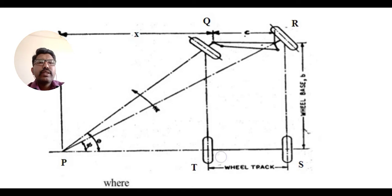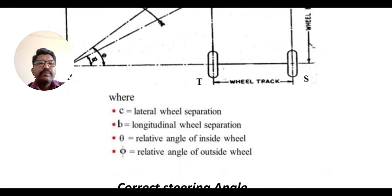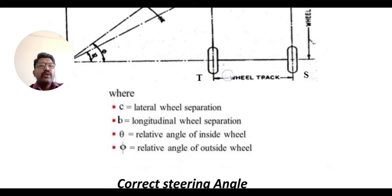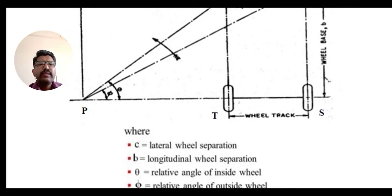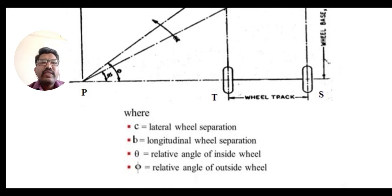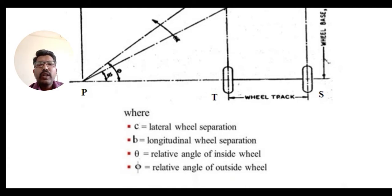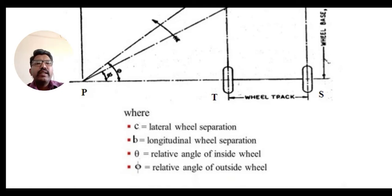When a vehicle is turning, there will be two different angles. Here we represent them as angle theta and angle phi, where angle theta is the angle of the inside wheel lock and phi is the angle of the outside wheel lock. Lock is the maximum angle up to which the wheel can turn while steering — that is called the steering lock.